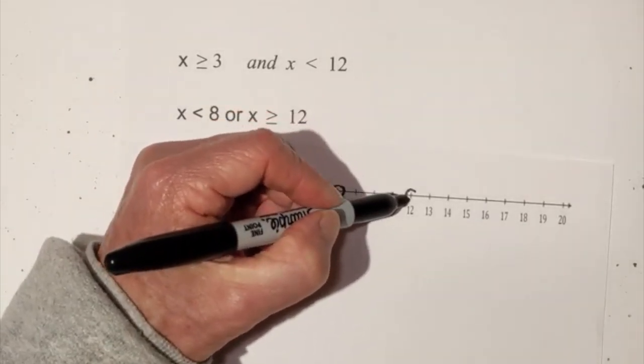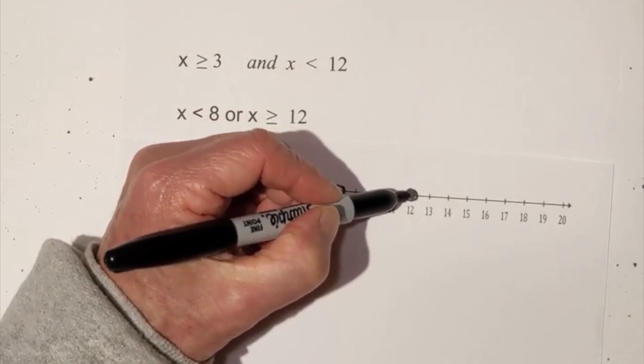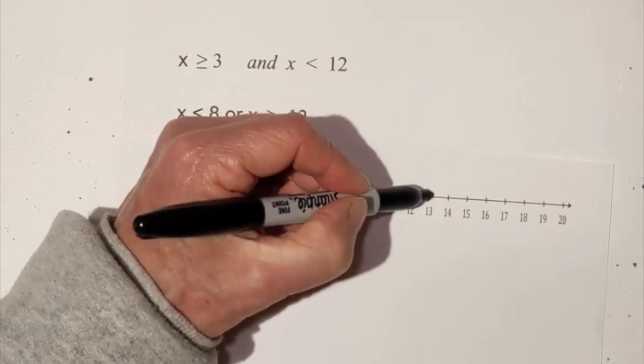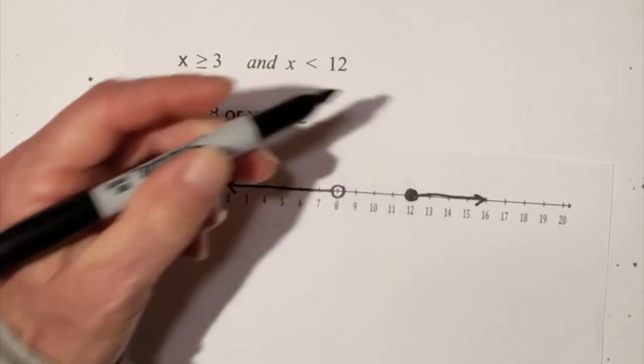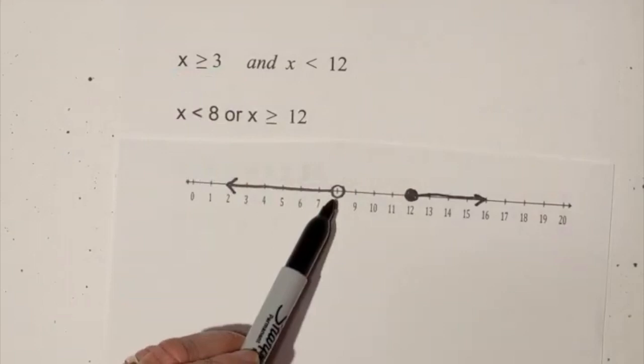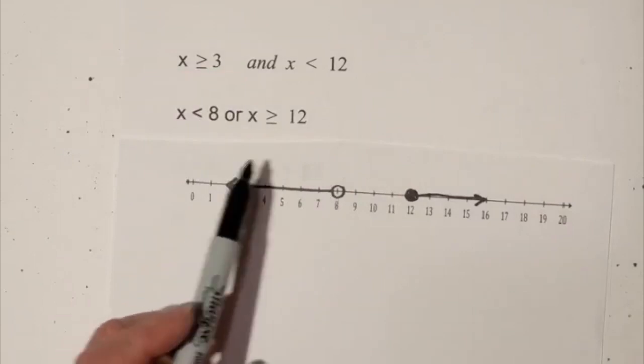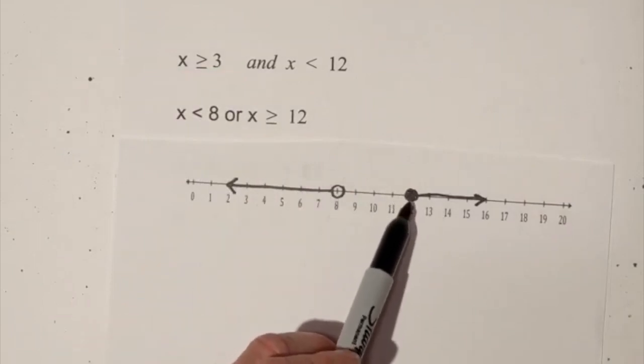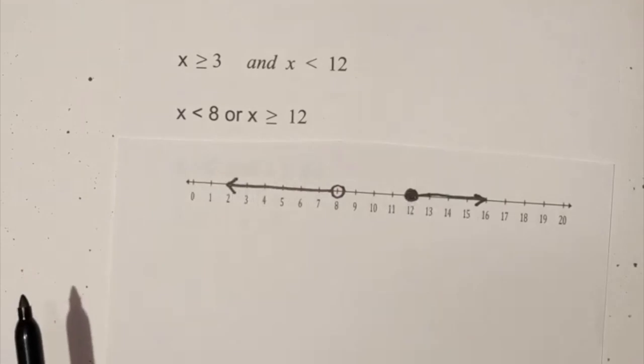So it's going to be like this, okay, and goes in this direction so let's make sure it's correct. So it's less than 8 or greater than or equal to 12. So that looks good.